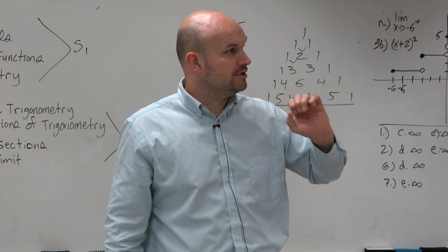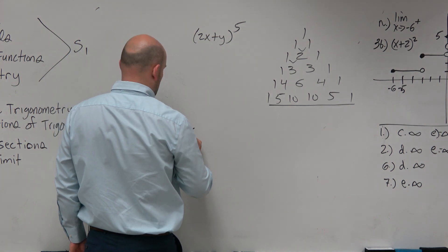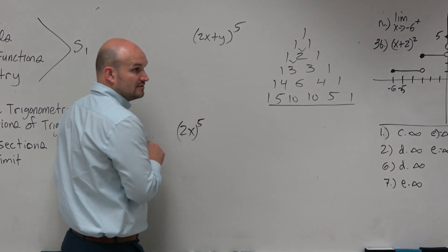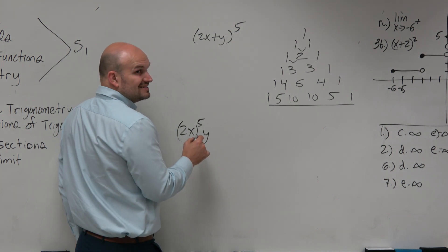We also need to remember on binomial expansion, the first term always starts to the highest power. So 2x to the fifth. And the second term starts at zero.